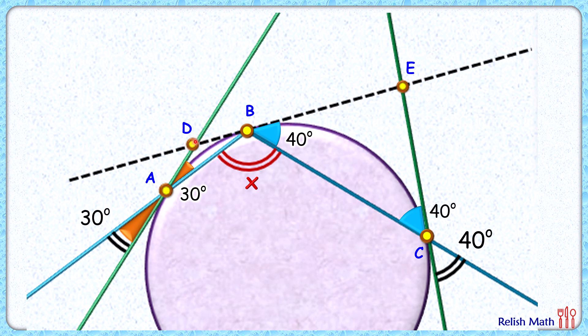Now the solution is clear. This black dotted line, or the tangent, is a straight line. The sum of all these angles at point B will be 180 degrees, and thus the value of x will be 180 minus 70, that's 110 degrees. And that's our answer.